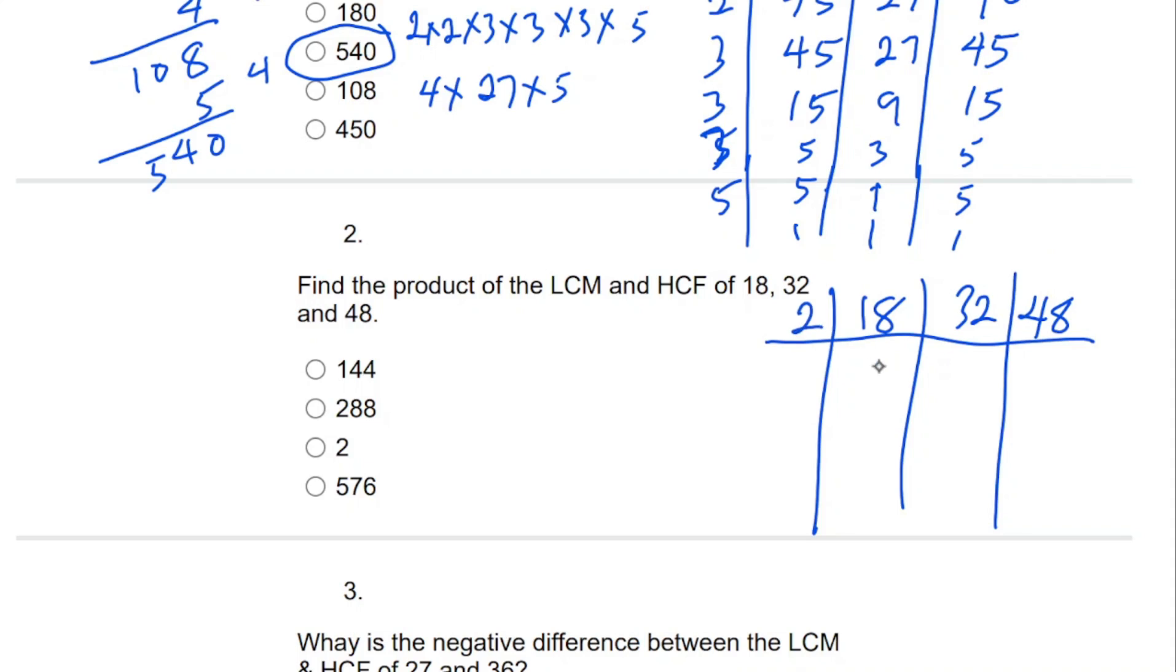2 can go. That is 9, 16, and 24. Do we have any number that can go again? No. So that means the HCF is 2.